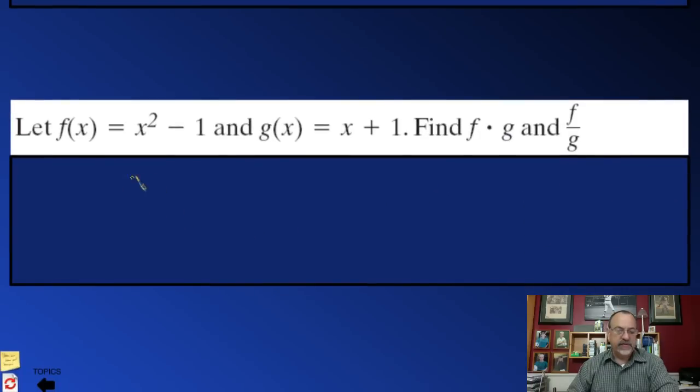To multiply functions is no different than adding or subtracting. We take the entire f function, multiply it times the g function. The f function again is x squared minus 1, and we multiply it times the g function, x plus 1.